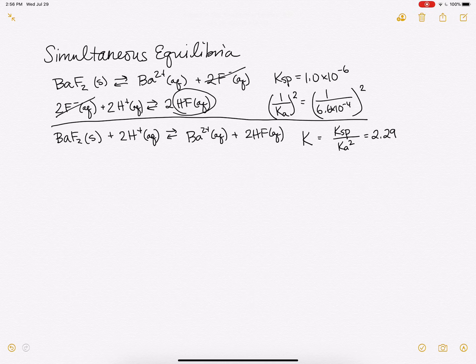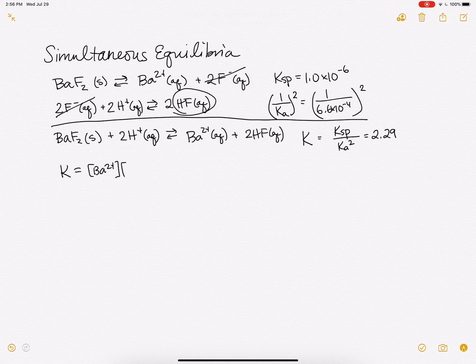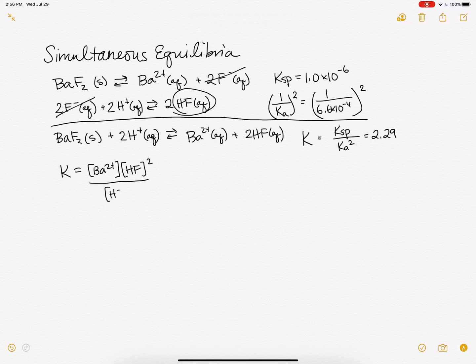Okay, so this is our new K value for this new reaction that we've written. And if we write the expression, we'd get K equals our barium times our hydrofluoric acid squared divided by our H plus squared. And that's our new expression for our K for this reaction.